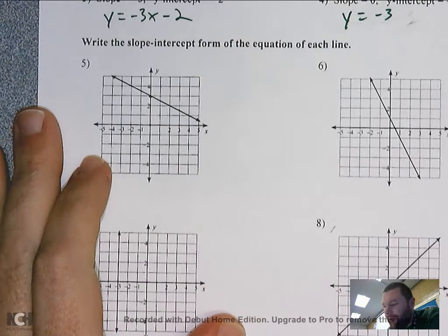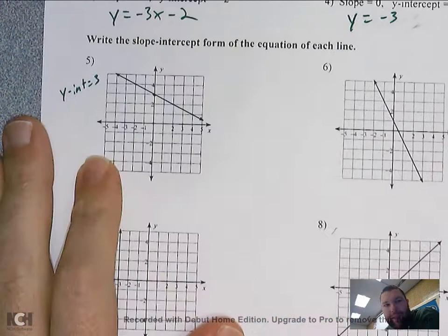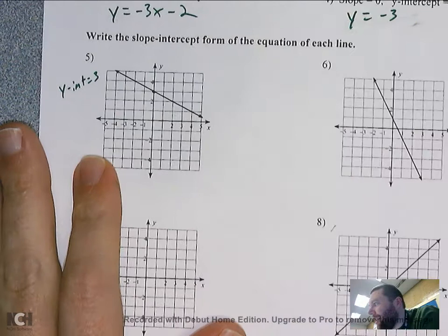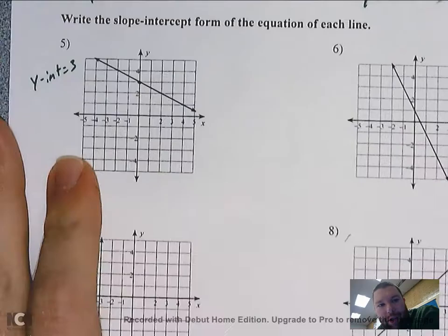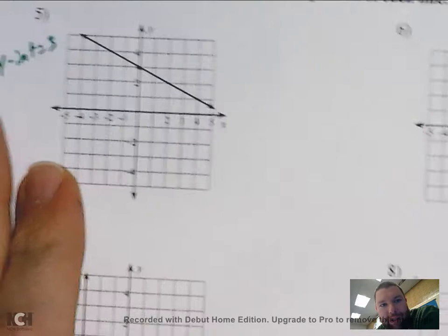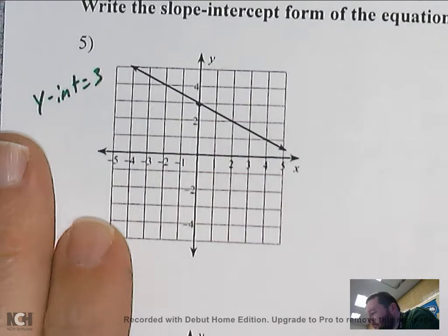My y-intercept is going to be three. To find my slope I find two points where the line hits an intersection on the grid. I'm going to zoom in a little bit so you can better see where this line is hitting the intersections.